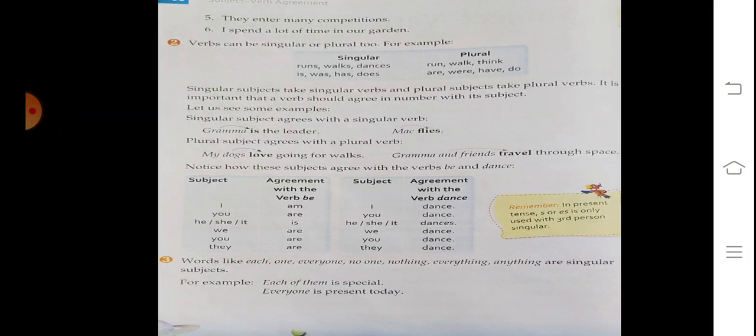Words like each, one, everyone, no one, nothing, everything, anything are special subjects. For example: 'Each of them is special.' 'Everyone is present today.'